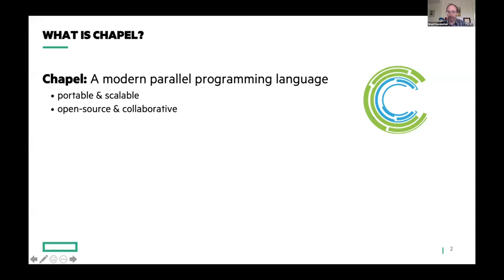To start out, if you are here and somehow don't know what Chapel is, or if you're watching this online after the fact, Chapel is a modern parallel programming language. It's designed for parallelism from the start, and it's also designed to be portable and scalable. We're very happy that Chapel runs on laptops, desktops, clusters, the cloud, and of course supercomputers from HPE and other vendors.